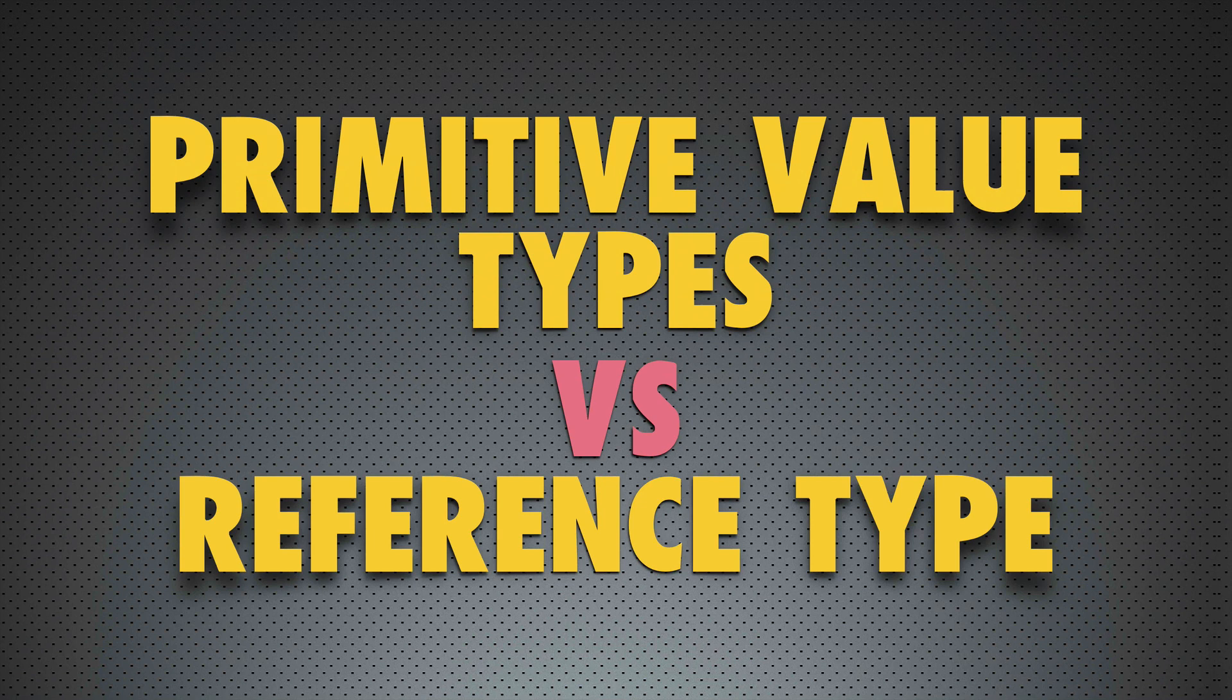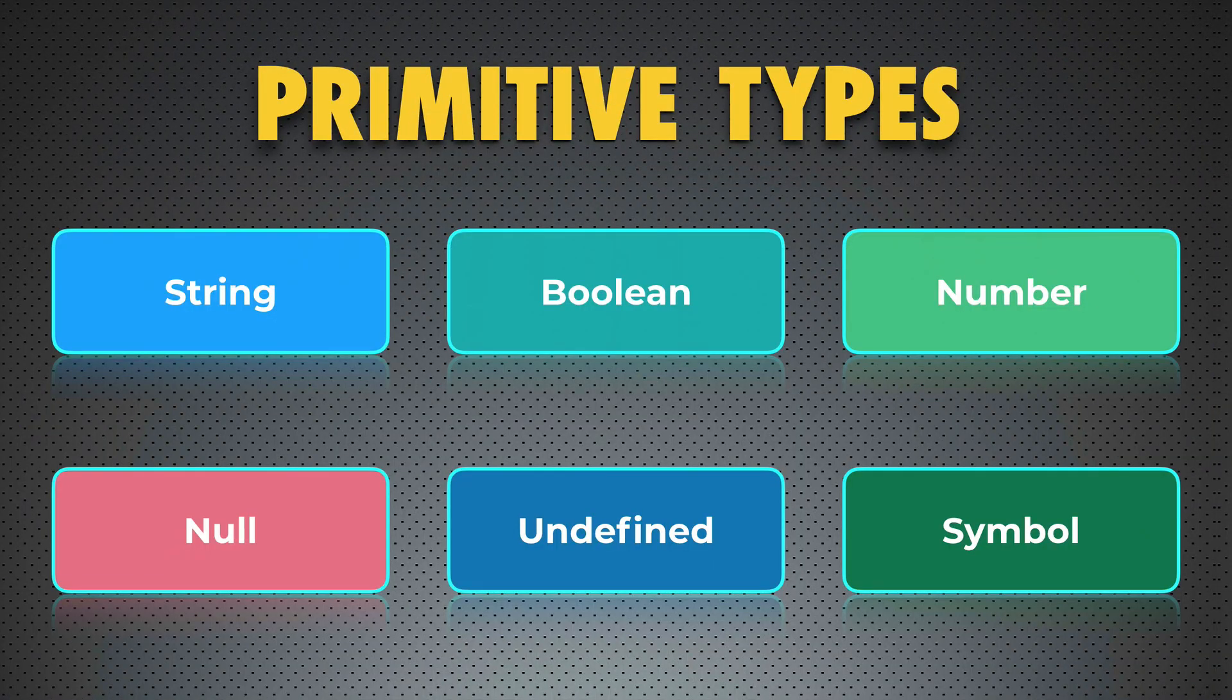And first group is primitive variable types. And there are six of them: String, boolean, number, null, undefined and symbol.